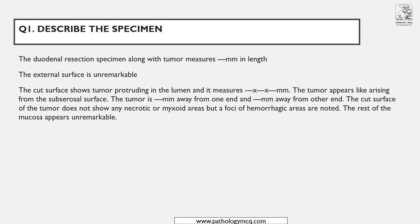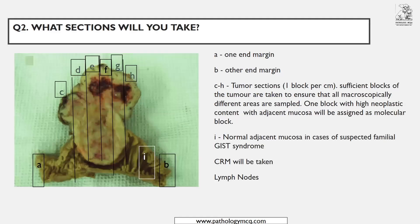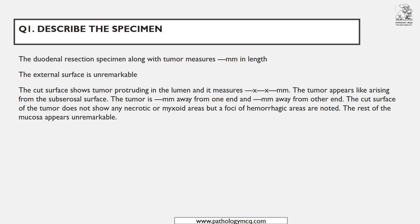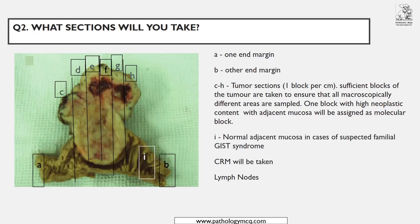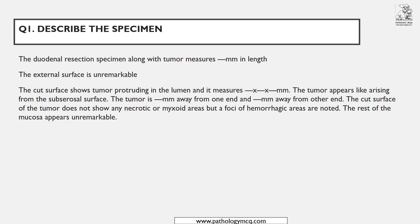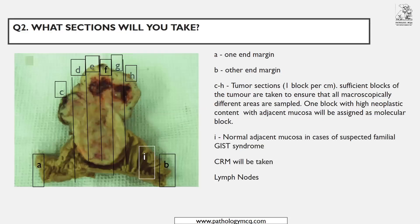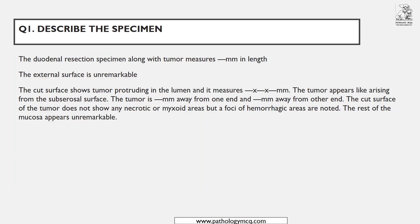Now for the macroscopic core data items: it is a duodenal resection specimen. Most of the time they will tell you whether it is a duodenal, intestinal, or stomach resection. If not, try to determine whether it is small or large intestine and describe accordingly. The duodenal resection specimen measures a dash in length.